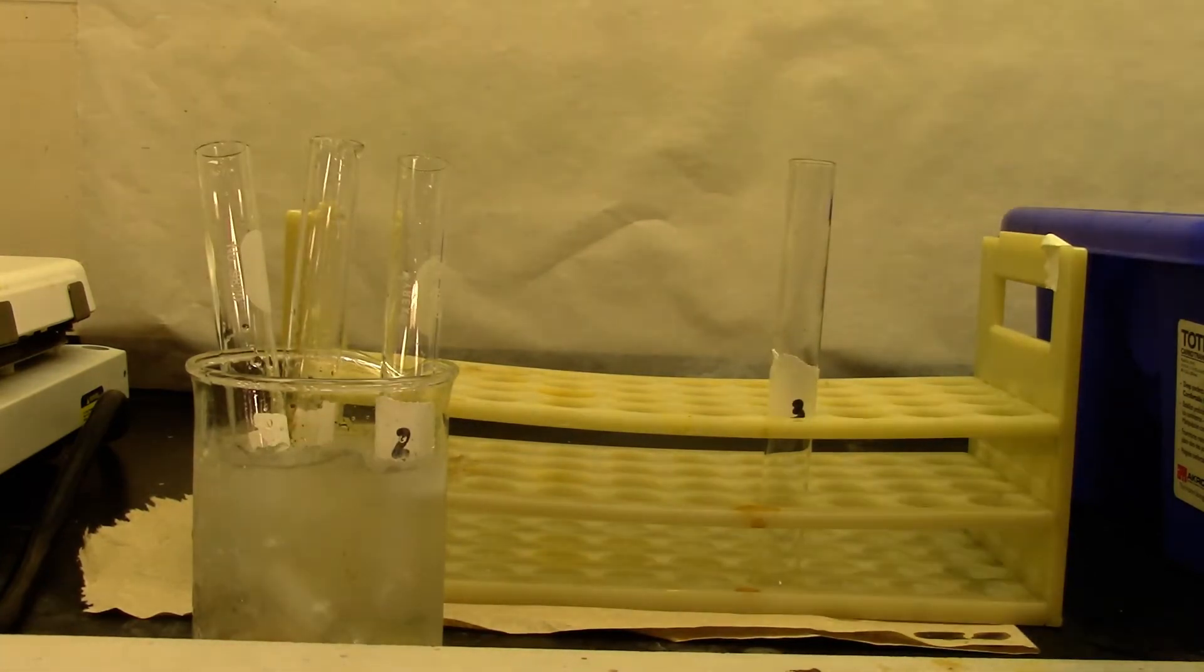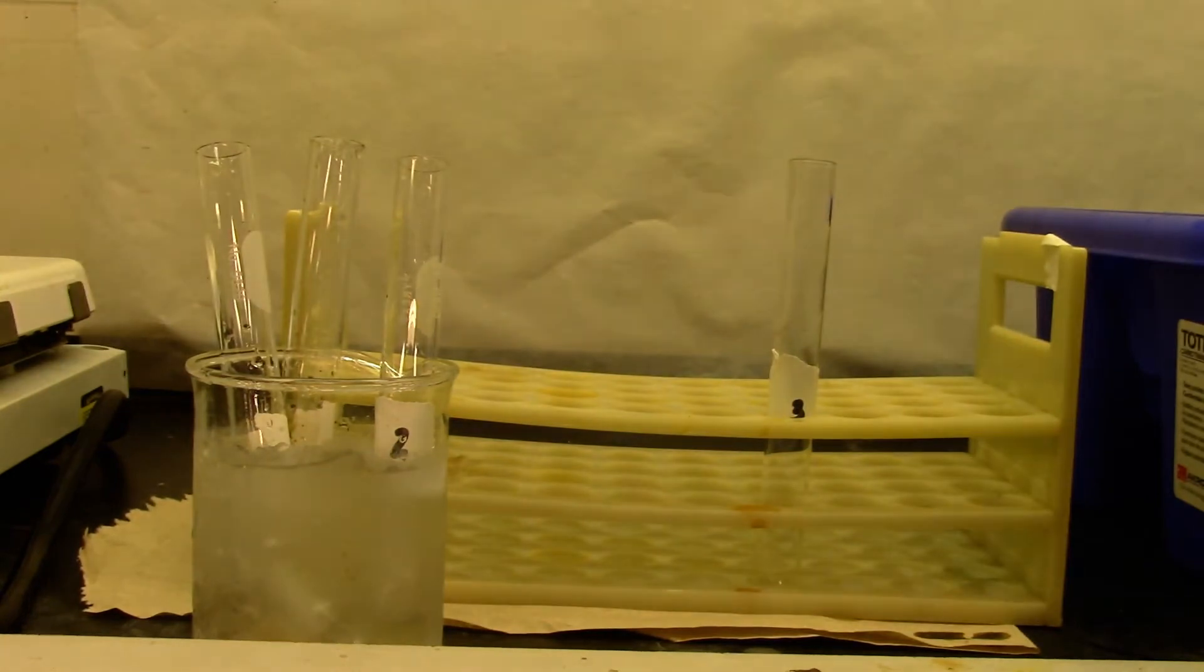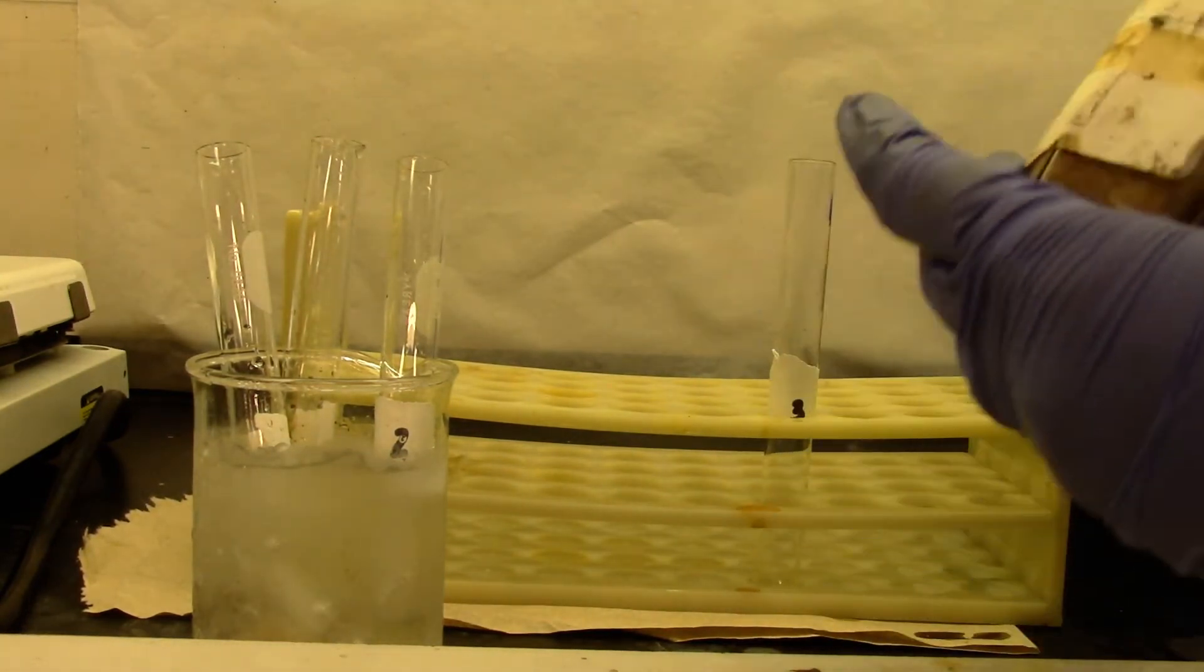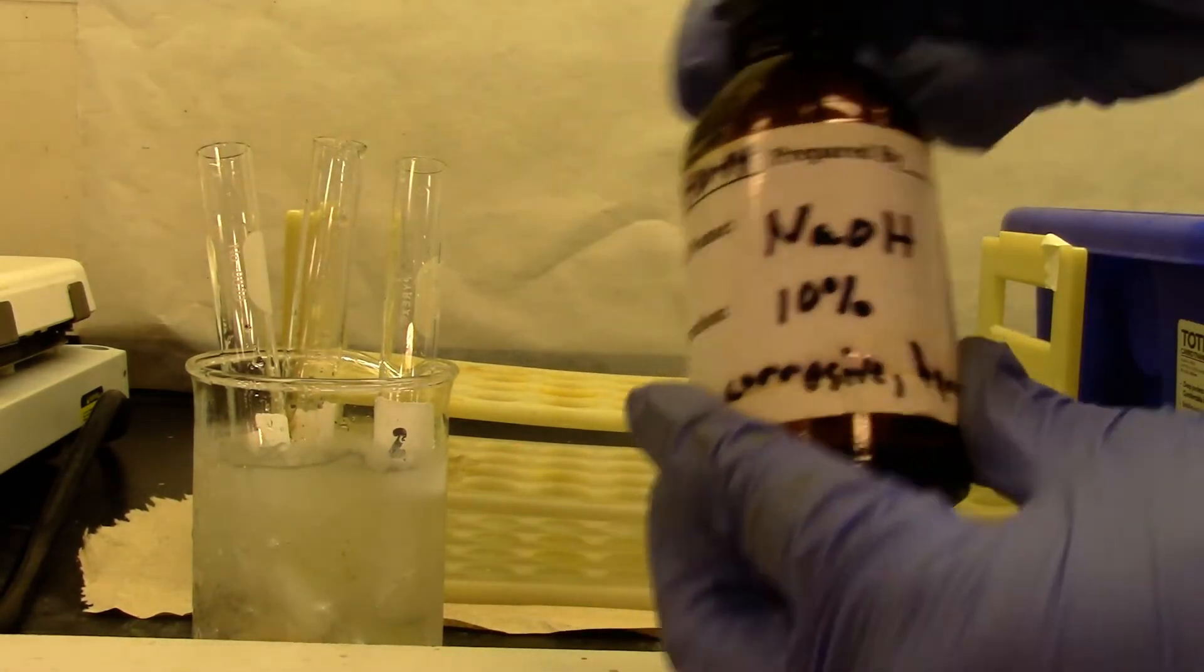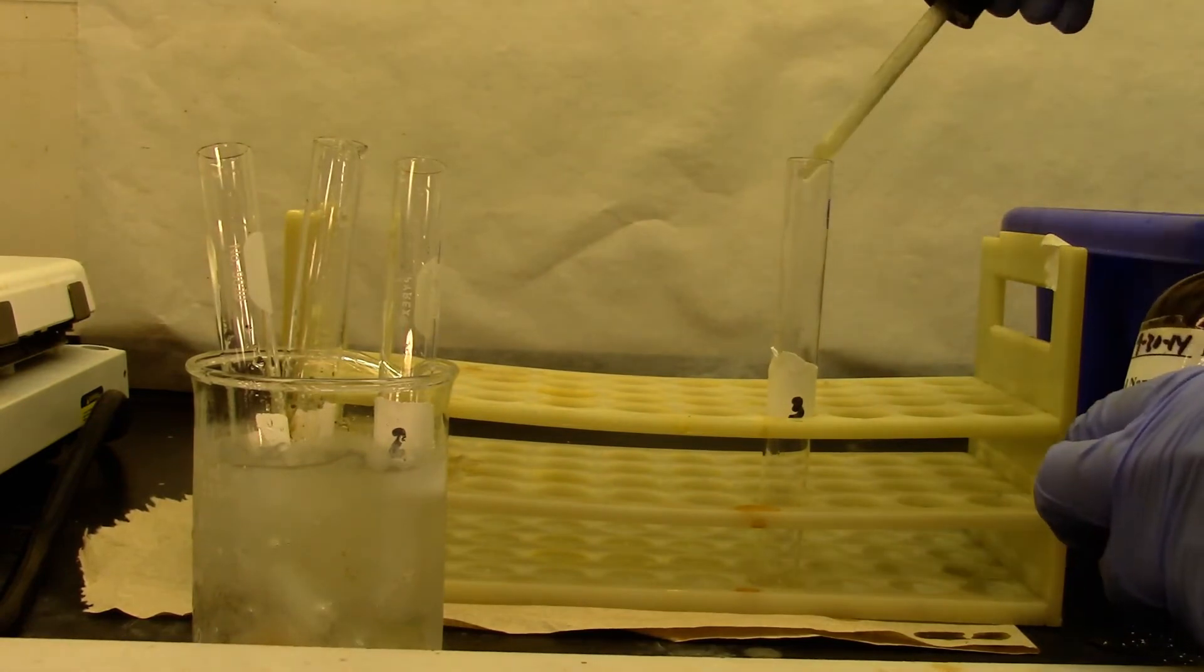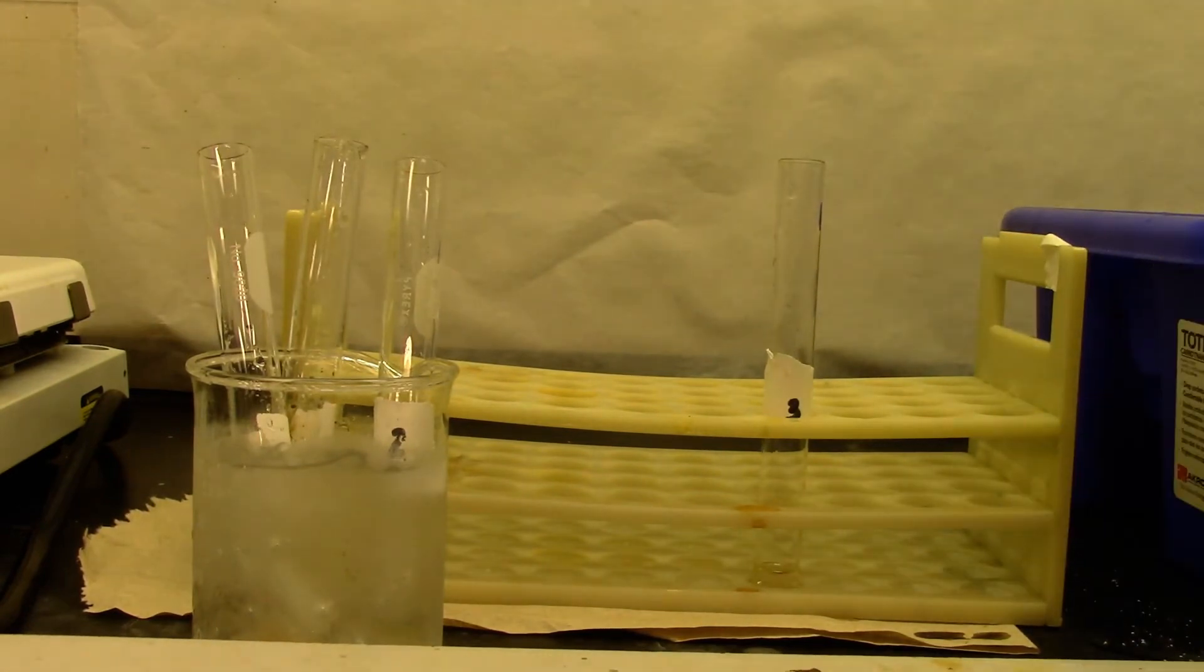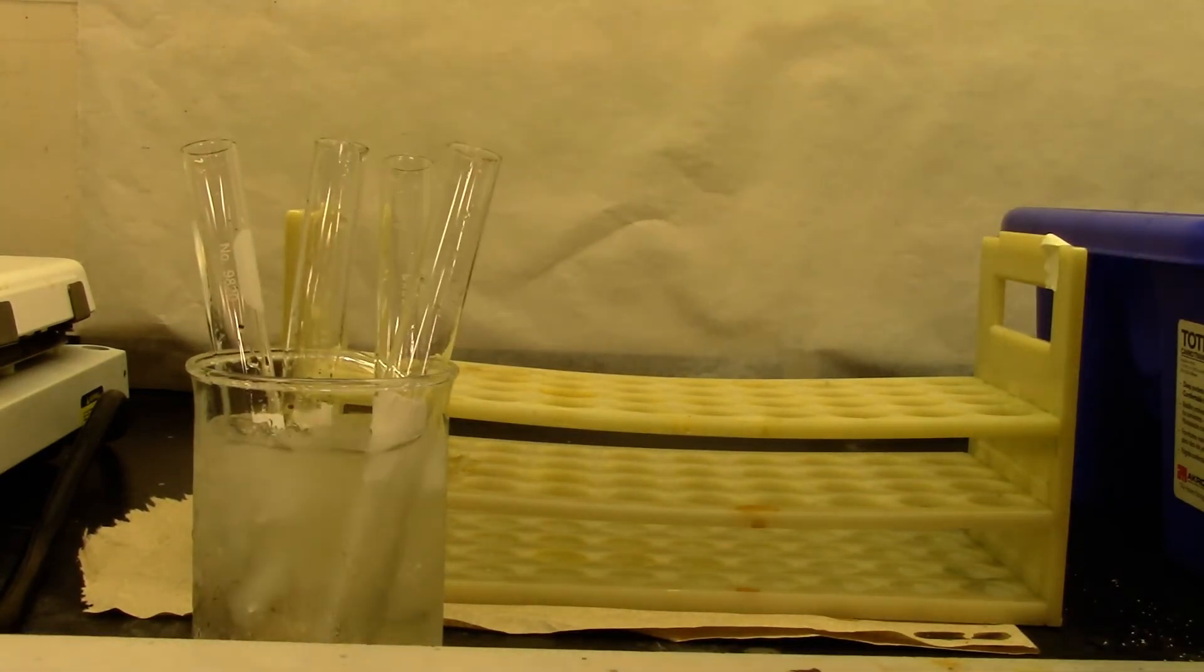This is also going to cool in the ice bath. For the third test tube, I am going to prepare a solution of beta-naphthol. A pinch of beta-naphthol, and about 1 mL of 10% sodium hydroxide to prepare a solution. Give it a mix. We will place it in the ice bath as well. Everything needs to cool down.